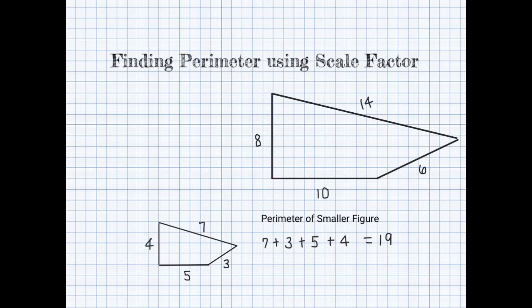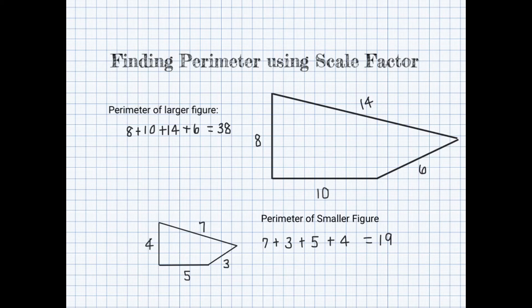Now that we've covered finding missing sides using scale factor, we can also find perimeter using scale factor. The perimeter of the smaller figure is 7 plus 3 plus 5 plus 4, which equals 19. Since we know the sides of the larger figure, we can solve for its perimeter: 8 plus 10 plus 14 plus 6 equals 38.